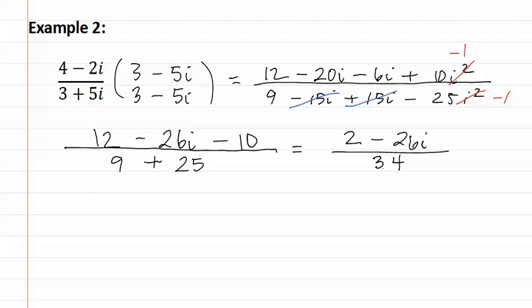Now we need to see if anything divides out. There is a two in common on the top, which gives us two, and then one minus thirteen i. And on the bottom is thirty-four.